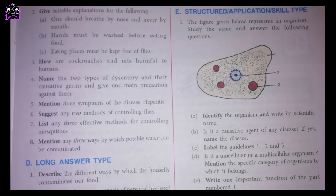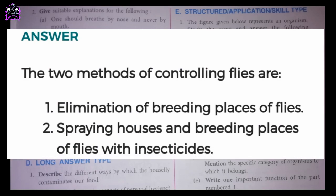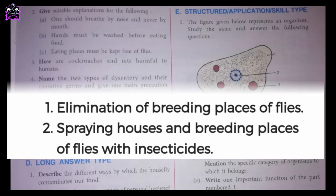Sixth one: suggest any two methods of controlling flies. The two methods of controlling flies are: 1. Elimination of breeding places of flies. 2. Spraying houses and breeding places of flies with insecticides.